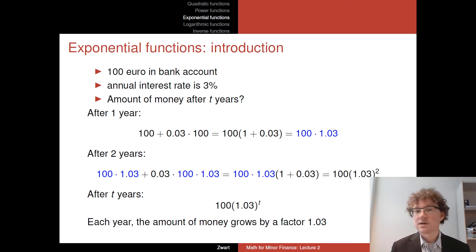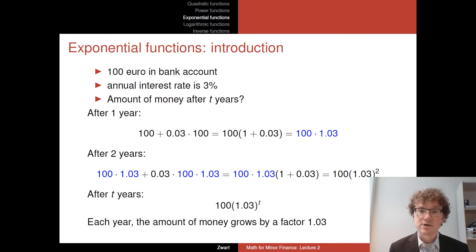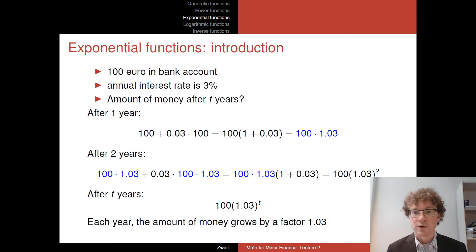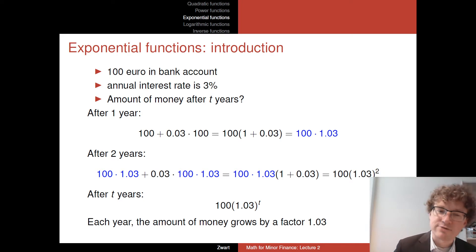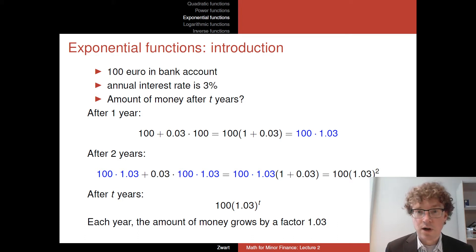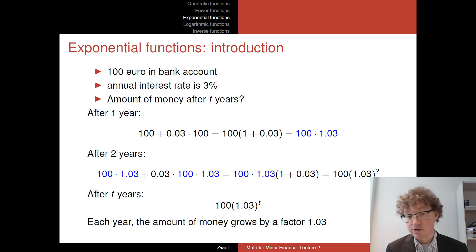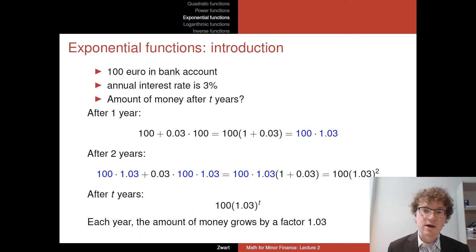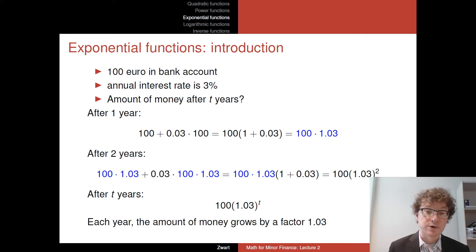After one year, you get the 3% interest. You put in 100 euros and get interest of 0.03 times 100, which is 3 euros, adding up to 100 times 1.03 euros. After two years, you start with 100 times 1.03 from year one, and in the next year you get interest on the entire 100 times 1.03 — interest on interest — giving you 100 times 1.03 squared.